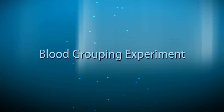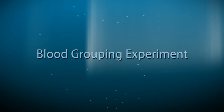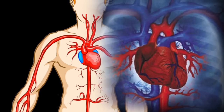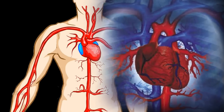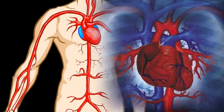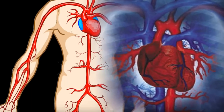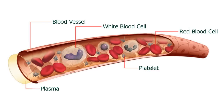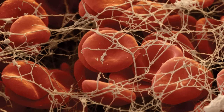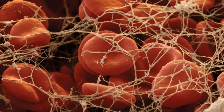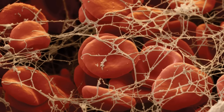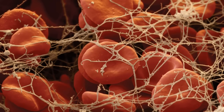Blood Grouping Experiment. An adult human has about 4 to 6 liters of blood circulating in the body. Blood consists of several types of cells including white blood corpuscles or WBC and red blood corpuscles or RBC floating around in fluid called plasma.